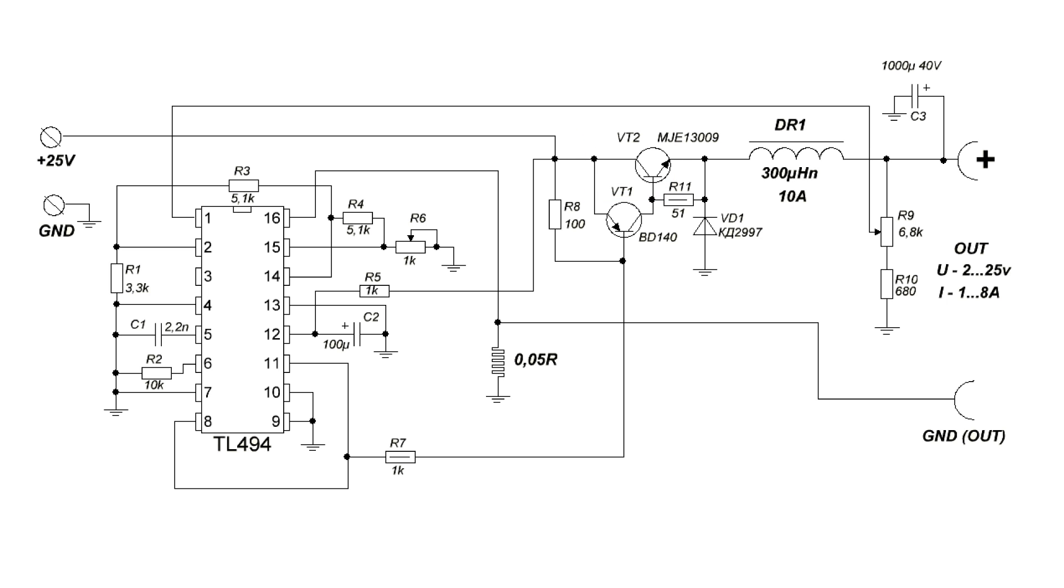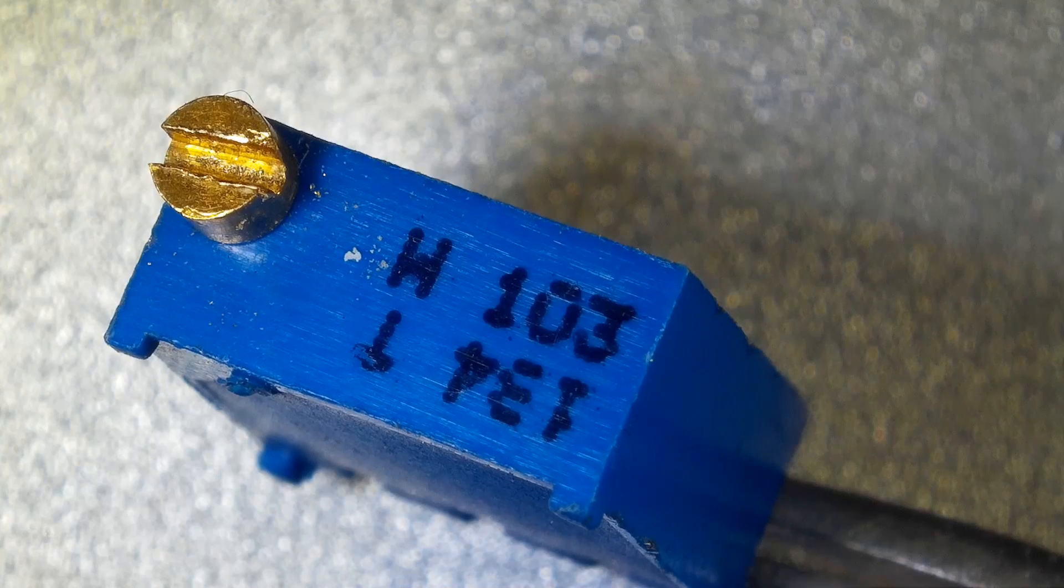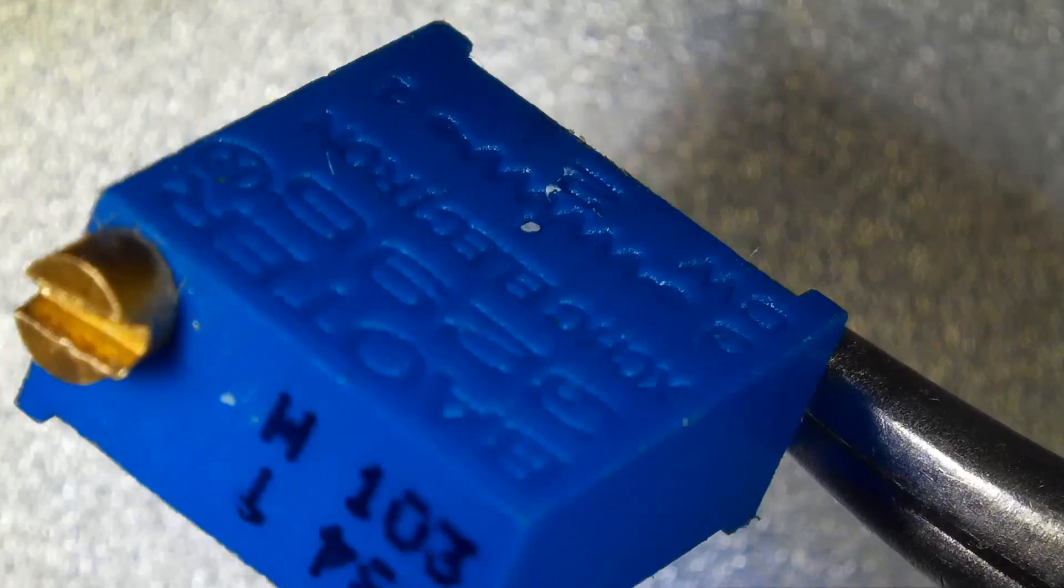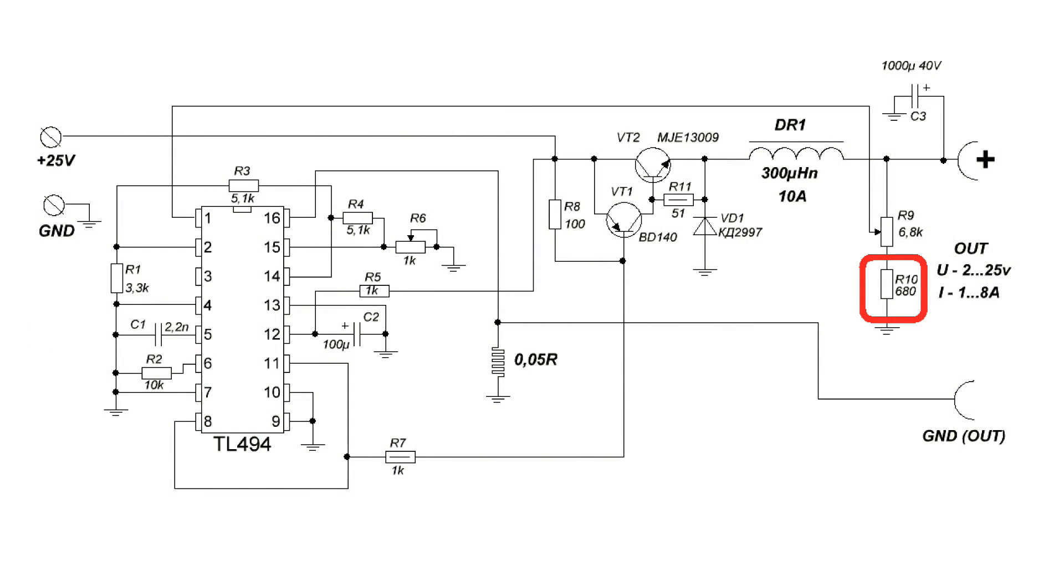Output voltage regulation is carried out by the variable resistor R9. For the most accurate settings, it is desirable to use a multi-turn resistor, preferable of 0.5 watts. Lower resistor can set the upper limit of the output voltage.